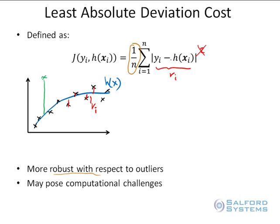The unfortunate part about LAD cost is that it may pose some computational challenges. The presence of the absolute value term introduces all sorts of numerical issues — for example, if you take a derivative of this, it faces issues around the zero region. It is not easy to write a compact, easy-to-use numeric algorithm that works with this particular cost. This is a well-known issue, which is why historically LAD occurs somewhat later, and to this day some algorithms may have issues working with this specific type of cost function.